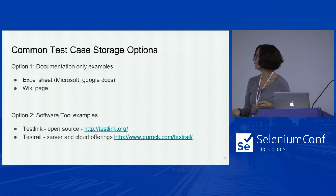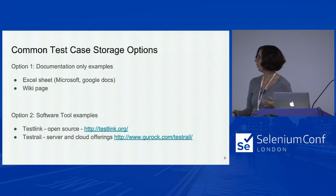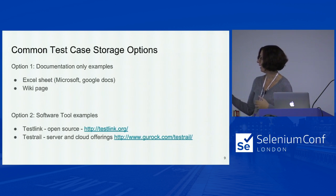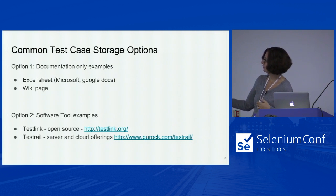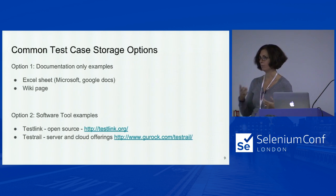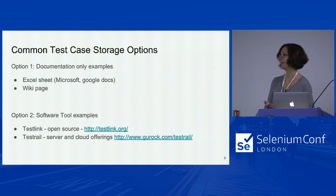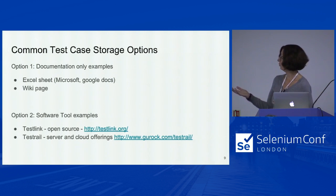Pick a tool to store and organize your manual test cases — it can be as simple or complex as you want. I break it down into two categories: documentation, meaning Excel sheet or a wiki; and software tool examples. TestLink is an excellent open source project. TestRail has both server and cloud offerings — that's the one I actually use. The good news is you can often import your Excel sheets or text files into one of those tools. So start small, start writing something down, start forming your plan. As you understand your requirements, you can move to a software tool if that's going to help.